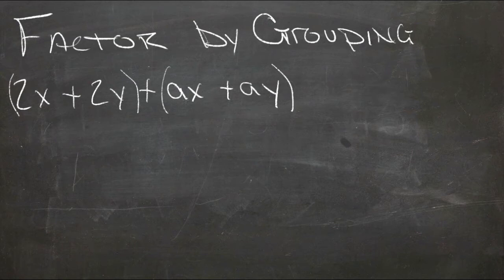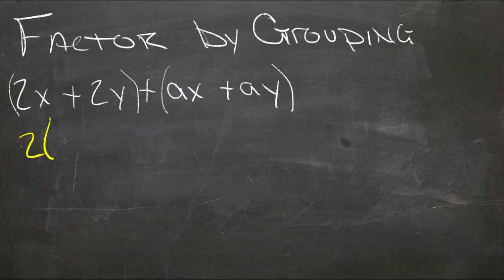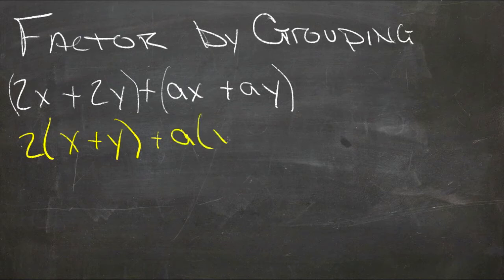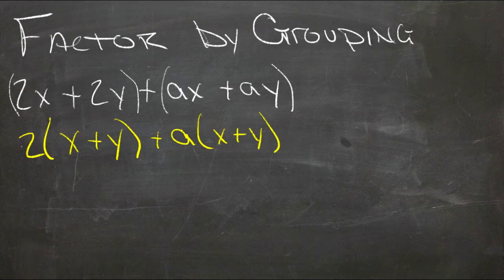So if we sort of handle those things separately, we could write 2x plus 2y as, let me change colors so it's a little easier to see, as 2 times x plus y, because that would be the same thing as 2x plus 2y, right? Just sort of the factored version. And then we would add that to a times x plus y, again, the factored version of this up here.